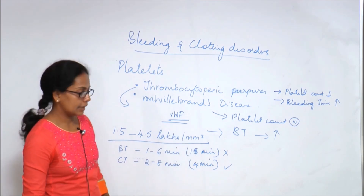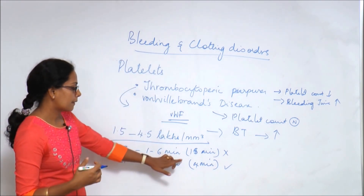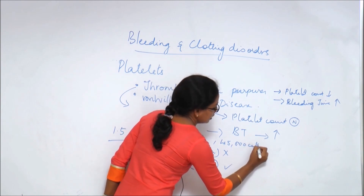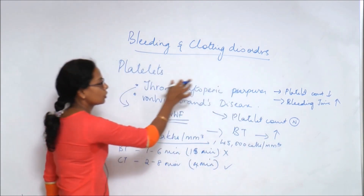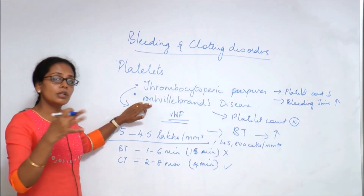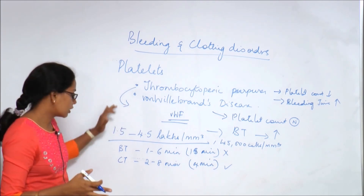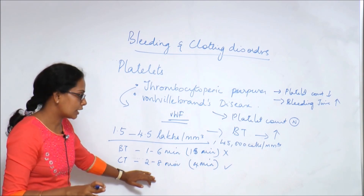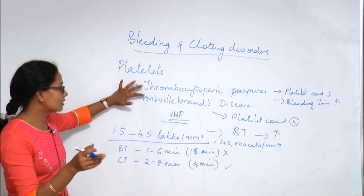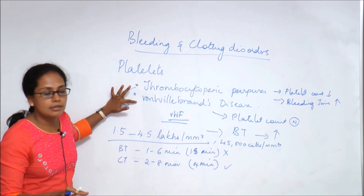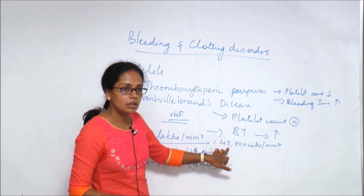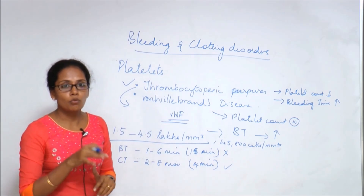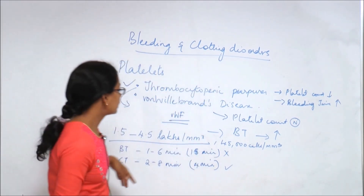With normal clotting time, prolonged bleeding time, and purpura — how do you categorize this? Since the platelet count is low at just 45,000 cells per mm³, and the clotting time is normal (meaning there is no deficiency of clotting factors), this is all to do with platelets. Since the platelet count is abnormal, it is definitely thrombocytopenic purpura. Suppose the platelet count was normal, then it would have been von Willebrand disease. This is how you analyze and answer the case.